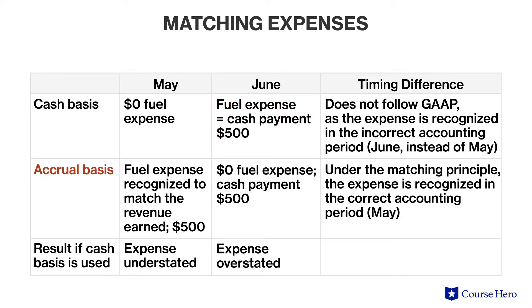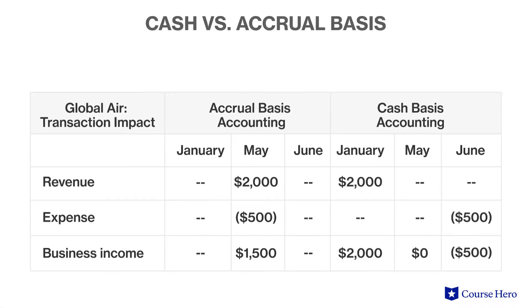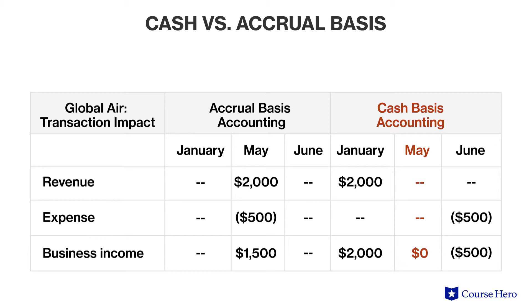Under the accrual method, on the other hand, Global Air will recognize the fuel expense in the same accounting period as the revenue earned. This means that Global Air will recognize the fuel expense in May, even though the payment does not occur until June. Under the accrual method of accounting, the business income for the month of May would be calculated by matching the expense with the revenue that the expense helped generate. When the customer's purchase of the ticket is combined with the airline's purchase of the fuel, the difference between cash basis and accrual basis becomes obvious. Under the accrual method, all of the income-generating activity happens in May. Under the cash basis, nothing is recognized in May, although the flight actually takes place in May.